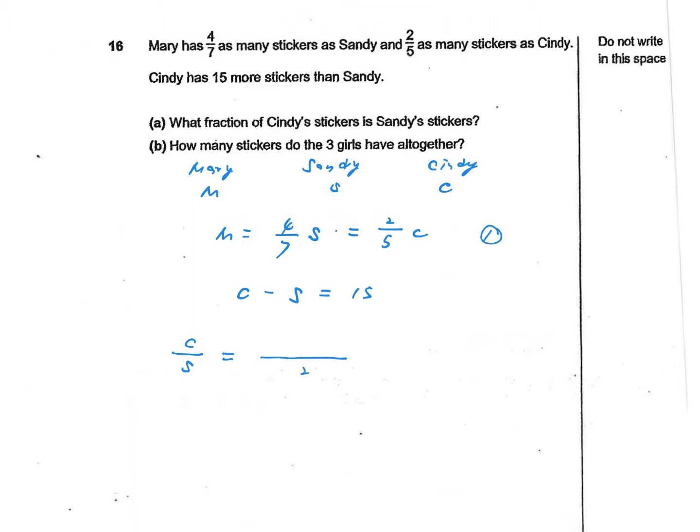C multiplied by 2/5 equals S multiplied by 4/7. Let's simplify this condition. C over S equals 4/7 multiplied by 5/2. The 2 cancels out to become 1, so that's 10/7. This is the answer to the first question.